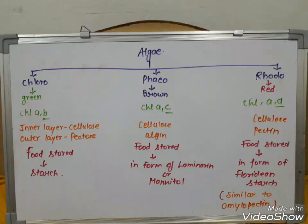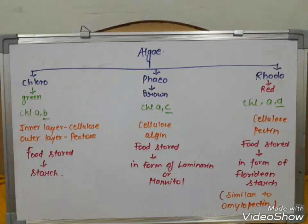Chlorophyceae has a cell wall of cellulose and food is stored as starch. Phaeophyceae has cellulose and algin in the cell wall, with food stored as laminarin and mannitol. Rhodophyceae has cellulose and pectin, with food stored as floridean starch, which is similar to amylopectin.